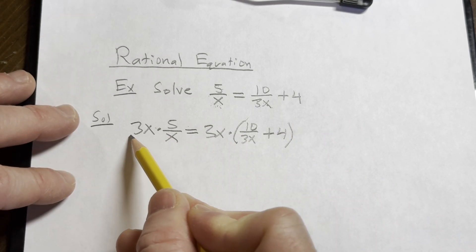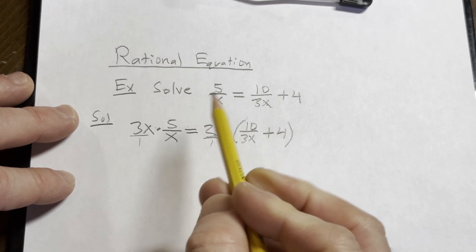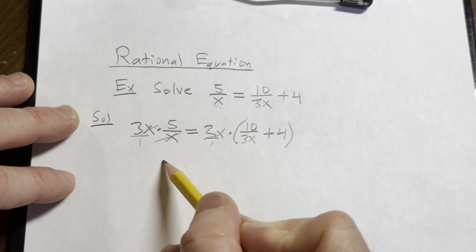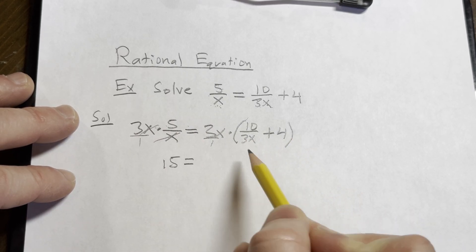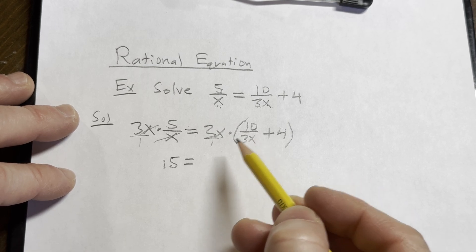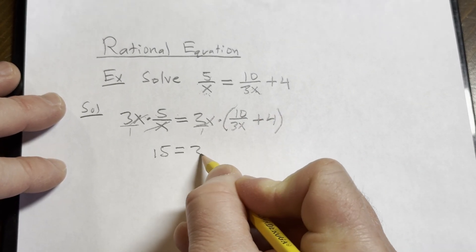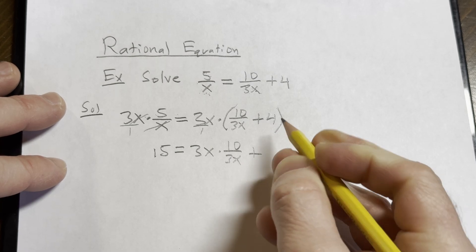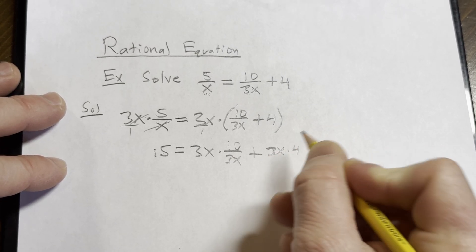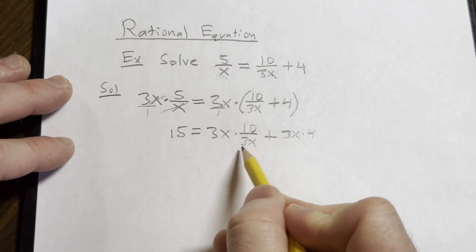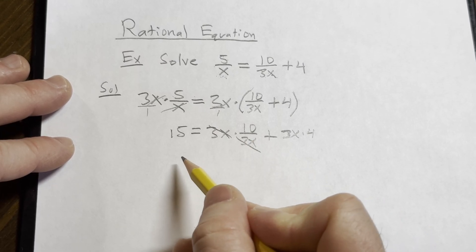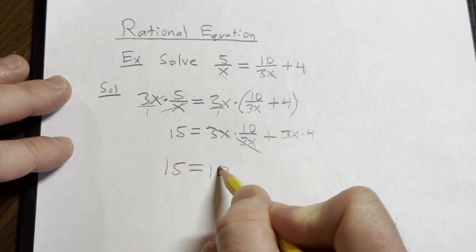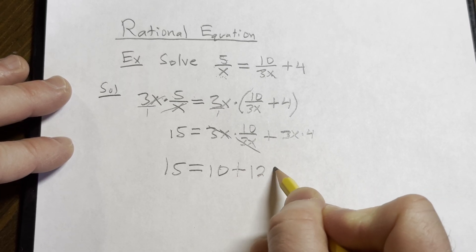x here is not 0. You can think of this as 3x over 1, and so these would cancel. So we end up with 3 times 5, which is 15. And this is equal to, here we need to distribute. And I could skip a step or I could show it. I'm going to show it. So this is 3x times 10 over 3x plus 3x times 4. And again, it's 3x over 1, right? These go away.